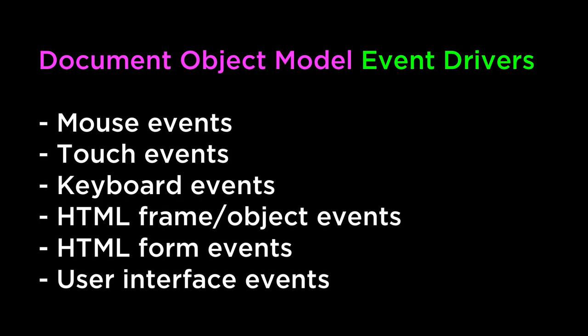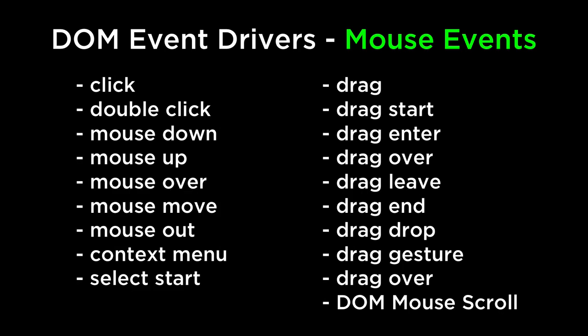Document object model events come in many different shapes and sizes. They can be driven by the mouse, by a touch, by the keyboard, and by a few other different types of specific actions. Because various web browsers had significant differences in implementation, the DOM event model was standardized by the W3C in DOM level 2. For this video we will only look at a portion of the mouse events.